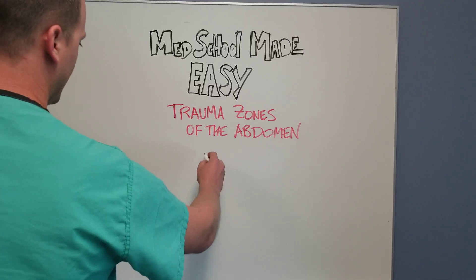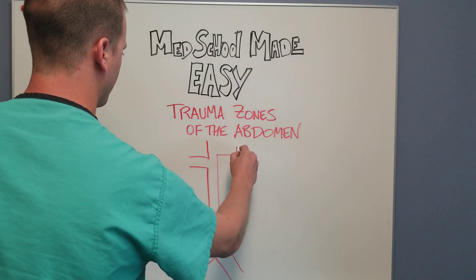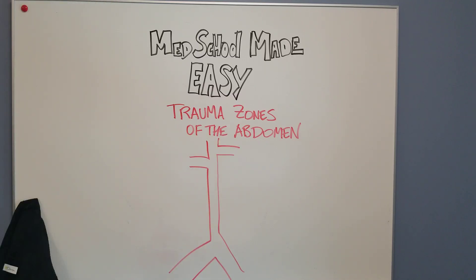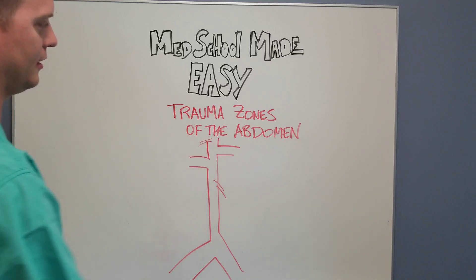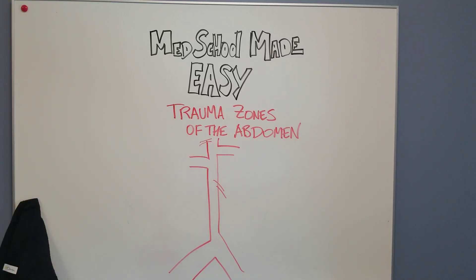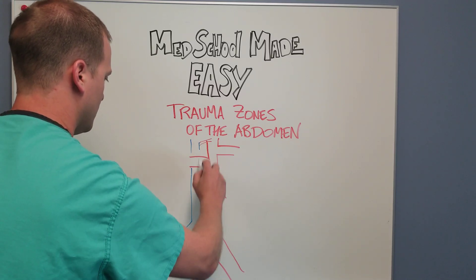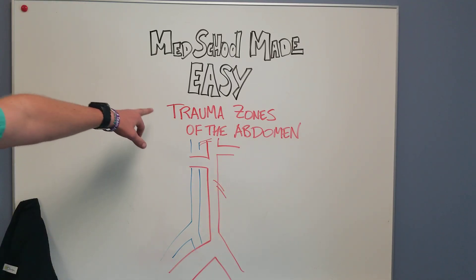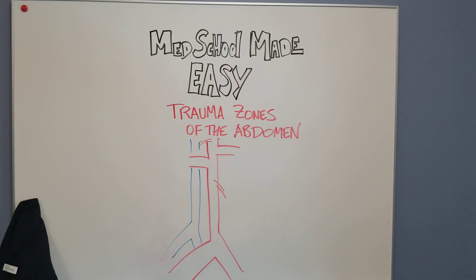So you have your aorta coming down. I'm going to draw the renal arteries, and of course you have your IMA, your SMA, and your hiatus. Zone one is the midline retroperitoneum, and the IVC, which would be over here. Zone one extends from the aortic hiatus down to the sacral promontory, which is kind of the top part of the sacrum.